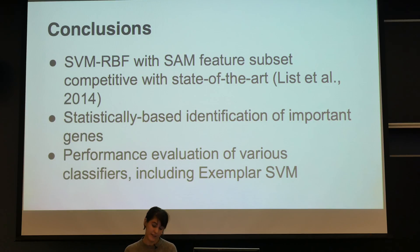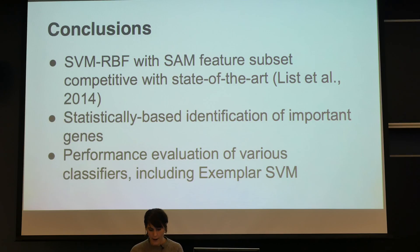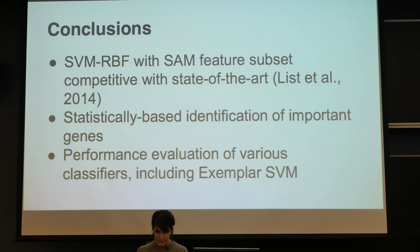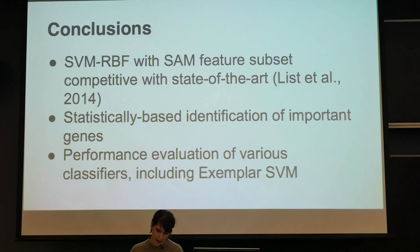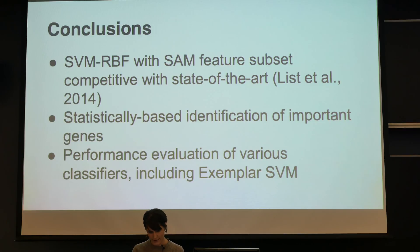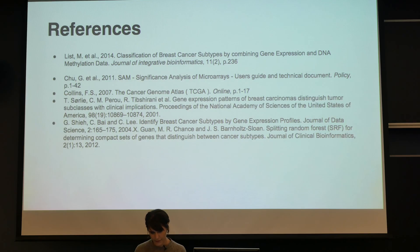Our conclusion is that the SVM RBF kernel with the SAM feature subset is competitive with the state of the art. We think in the next week we'll be able to beat it. We have also generated a statistically-based subset of genes that is better than the PAM50 heuristic set. We've evaluated a variety of classifiers and hope to identify the best one for addressing the cancer subtype classification problem.